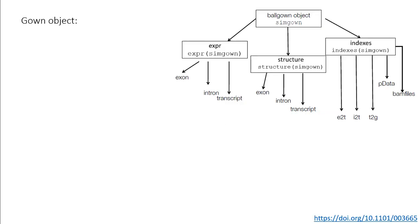The gown object just generated contains three linked components: the expression component, the structure component, and the indexes component, each of which contains multiple data tables. The expression component contains all the expression data for the genomic features: exons, introns, and transcripts.